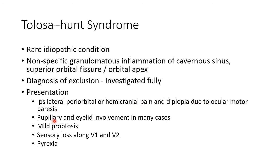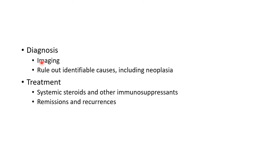There can be associated pupillary and eyelid involvement in many cases. Other clinical features include mild proptosis, sensory loss along the first and second branches of the trigeminal nerve, and pyrexia. Diagnosis requires imaging and ruling out identifiable causes including neoplasia. Treatment involves systemic steroids and other immunosuppressants, though remissions and recurrences can occur.